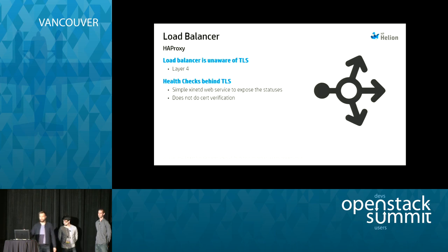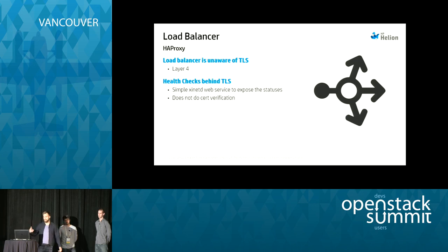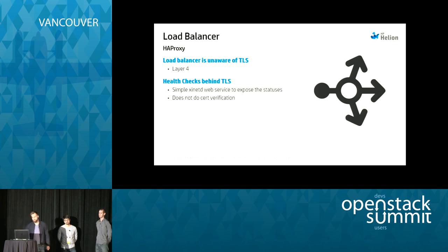Our load balancer HA Proxy doesn't really know about TLS — it runs at layer 4 and just hands off TCP packets. We did have to change the health checks. Before, they were just default HA Proxy socket connection checks. Now with S-Tunnel in between, we do full HTTP checks, which has actually improved the availability of our cloud. We've also made better checks for RabbitMQ and MySQL to check for partitioning.